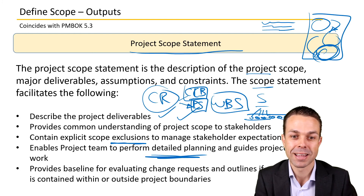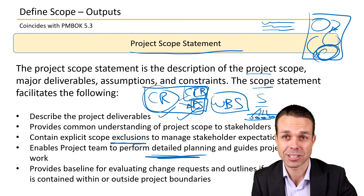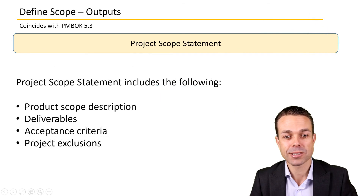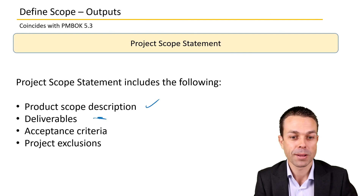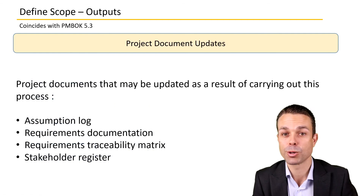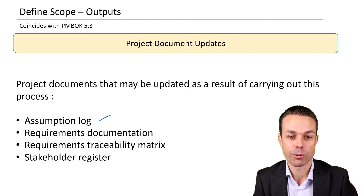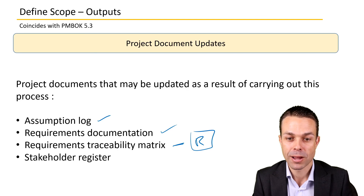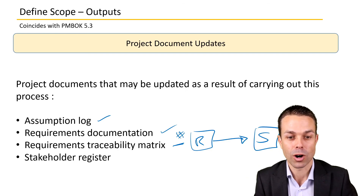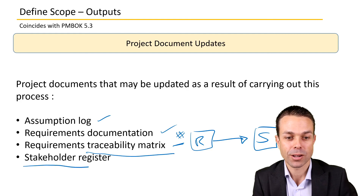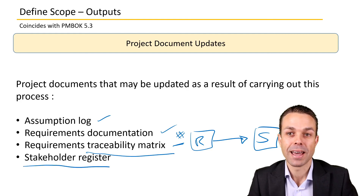Changes to the scope statement require approval and analysis of any impacts to cost and schedule. The project scope statement includes the product scope description, the deliverables, acceptance criteria for those deliverables, and any project exclusions. Project document updates may include updating the assumptions log, requirements documentation, and the requirements traceability matrix — matching requirements identifiers on one side to the scope being delivered, allowing us to fill out more of that matrix.